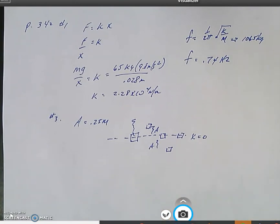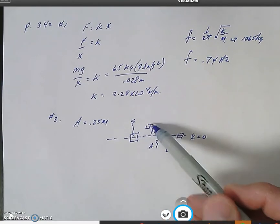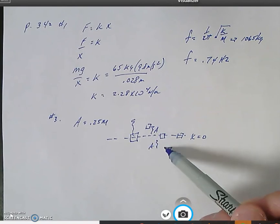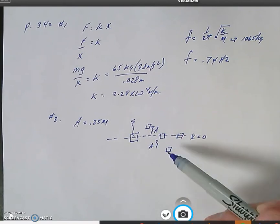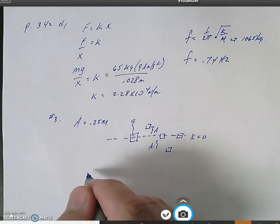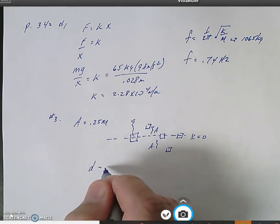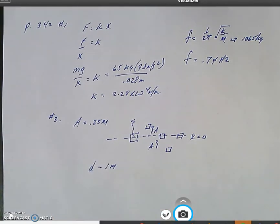and then it would come back up to the equilibrium spot. So it would go up A, down A, that's two A, down A, that's three A, up A, that's four times the amplitude. So our total distance in that particular situation would be equal to one meter.